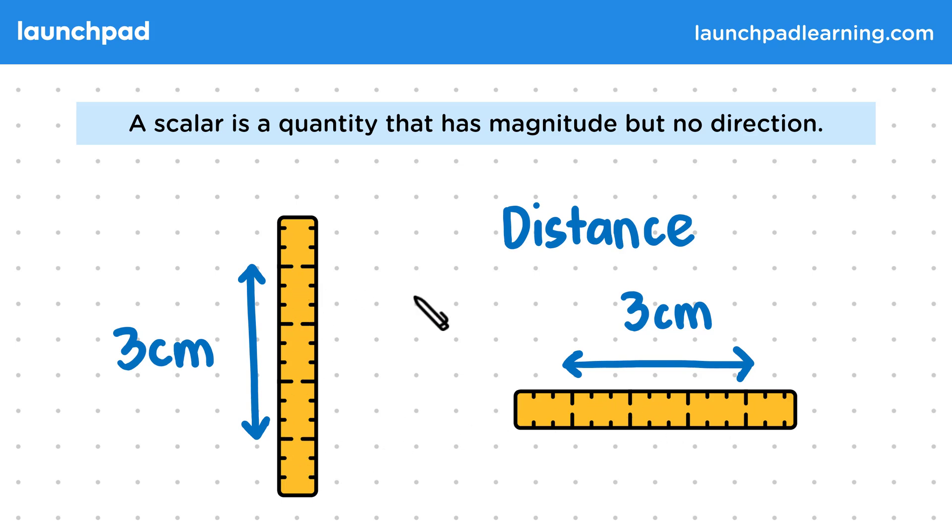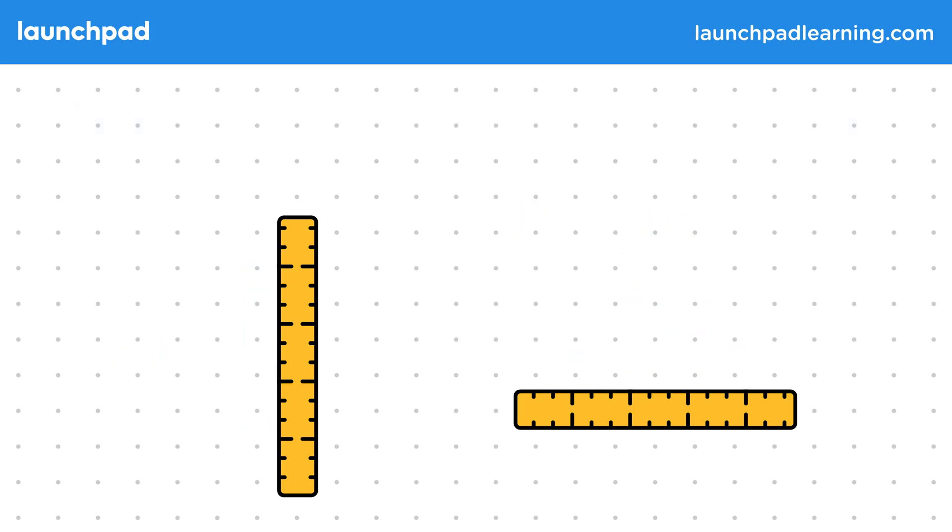But if scalars are quantities without direction, what are quantities with direction called? A vector is a quantity that has both magnitude and direction.